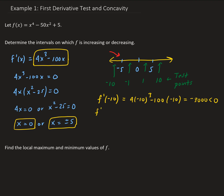The next test point is f prime of negative 1. That gives us 4 times (negative 1) cubed minus 100 times (negative 1), which equals 96. That is greater than zero, so the function is increasing between negative 5 and 0.